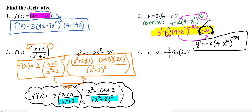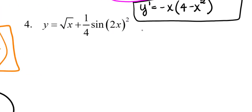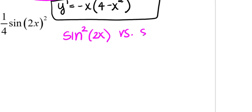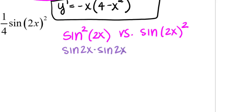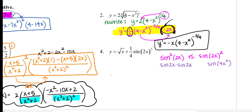Let's move on to our last one. y equals the square root of x plus 1/4 sine of the quantity 2x squared. There is a big difference between sine squared of 2x versus sine of 2x quantity squared. In the first, it's sine(2x) times sine(2x) — you're squaring the sine function. In the second, you're just squaring the quantity 2x, so it really is sine of 4x squared. Rewriting question 4: y equals x to the 1/2 plus 1/4 sine of 4x squared.